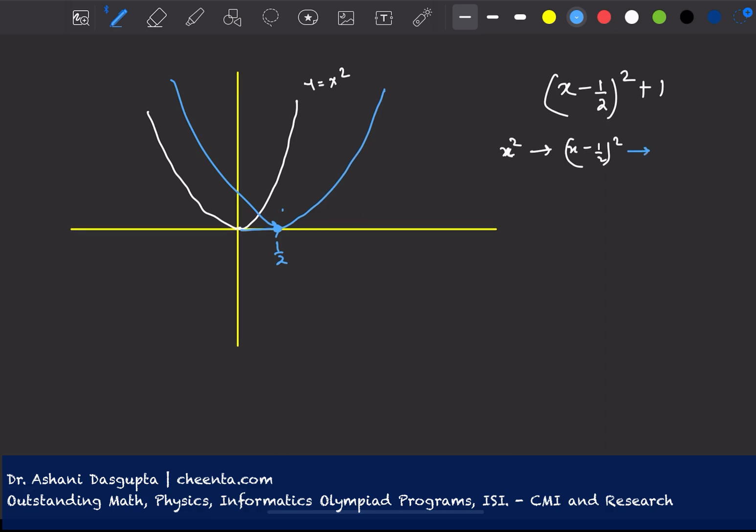And then I would like to add 1 to this, so it will move up by 1 unit. So maybe I'll draw this one in red. So what I used here, and this is a very important tool, transformation of graphs. We usually cover it in the algebra and calculus section of Cheenta Math Olympiad programs and ISI CMI entrance programs.